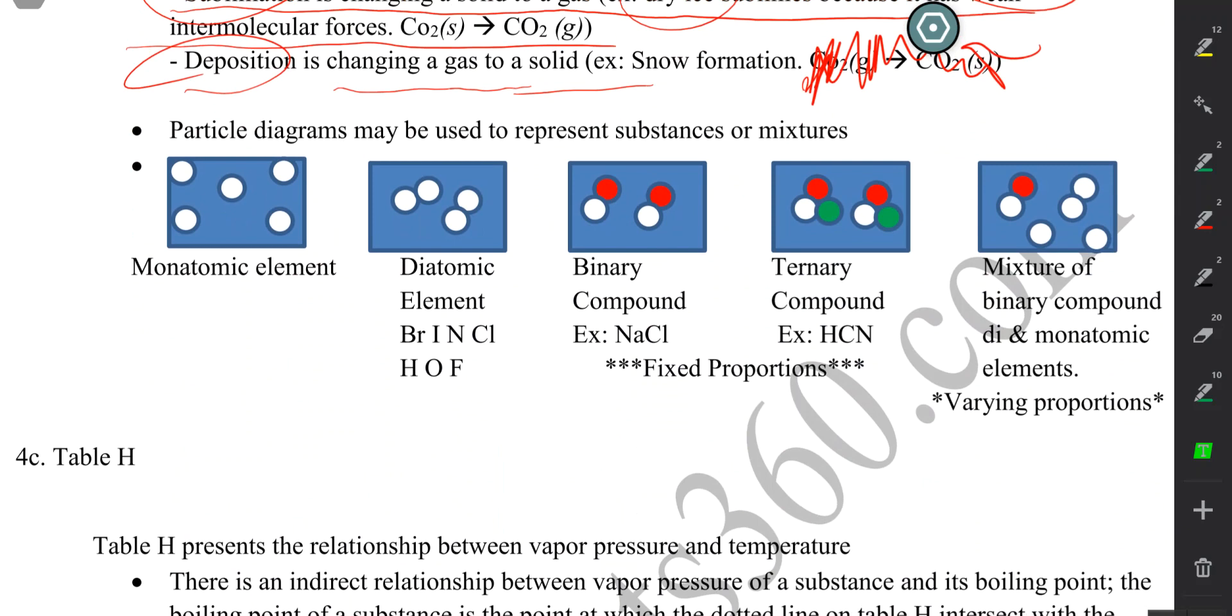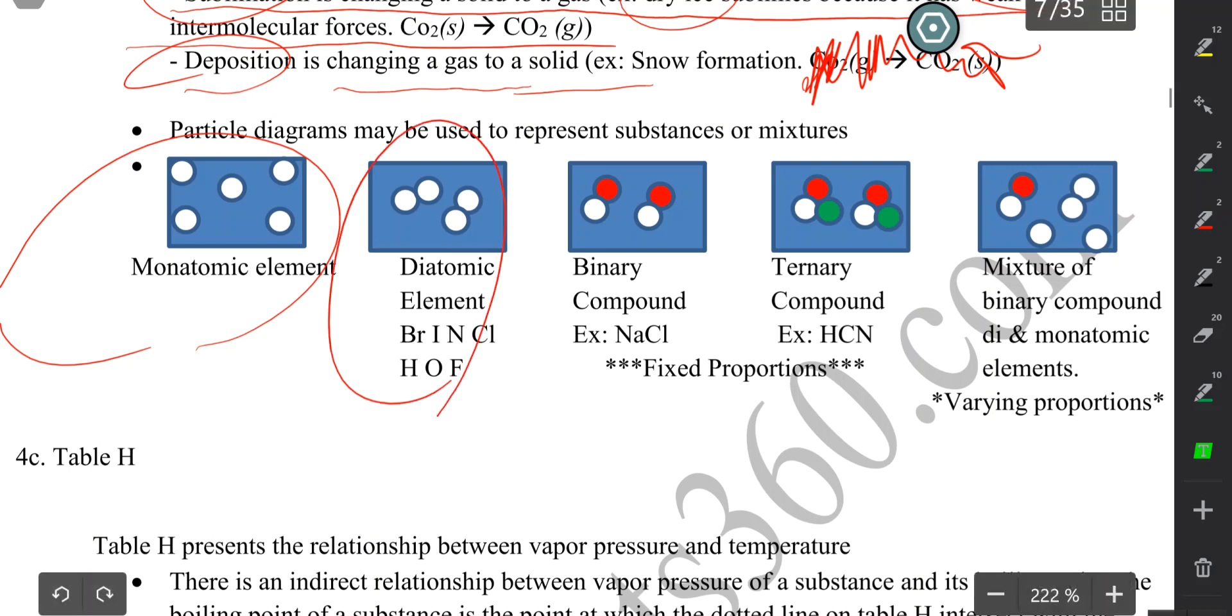Okay, we previously talked about—in the first video—we talked about the different types of elements. Monatomic, which are pretty much most of the elements in the periodic table. This is how you draw monatomic elements: just a single circle to represent the particle diagram of a monatomic element. Then you have diatomic elements. Diatomic elements, remember the Brincklehoff word. We use identical circles bonded together to represent diatomic elements. They have to be identical, same color, and they have to be in pairs.